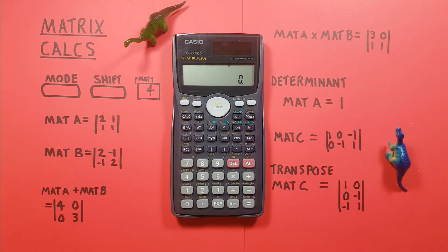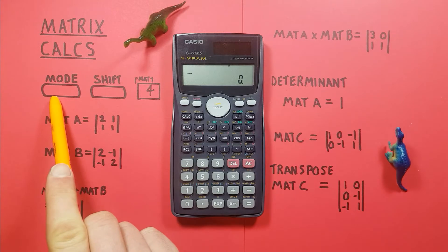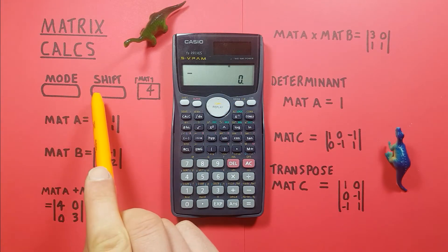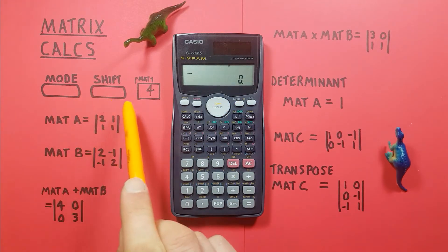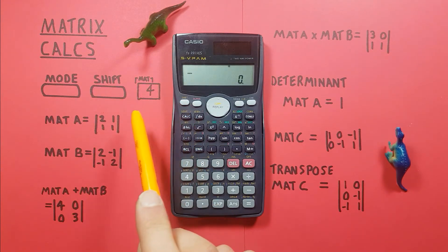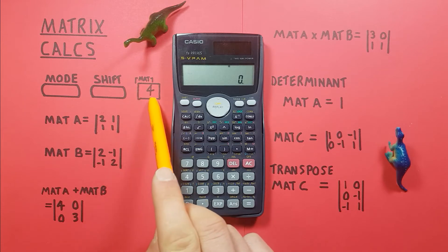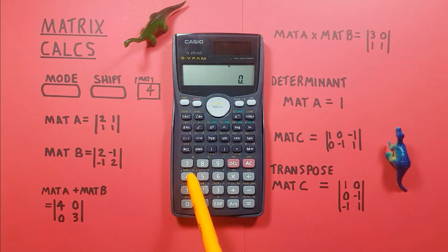Hello and welcome to HP Calcs. I'm Rick and today we're going to have a look at how we can use matrices on the Casio FX-991MS calculator. To do this we'll be using the mode key located here, the shift key located here, and the 4 key — with a shift mode of matrix mode — located here.